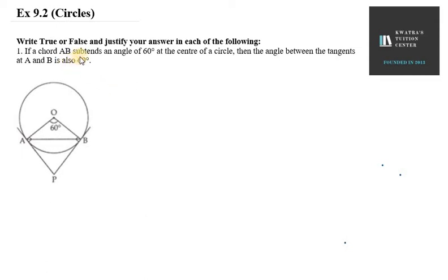It says if a chord AB subtends an angle of 60 degrees at the center of the circle, you can see in the center of the circle that this angle is 60 degrees.